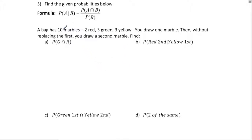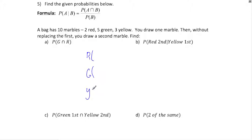I can make a tree diagram that shows all different combinations. To save space, I'll say I can either get red, green, or yellow, and put the probability of each one. The probability I get red the first time is 2 out of 10, the probability I get green is 5 out of 10, and the probability I get yellow the first time is 3 out of 10.